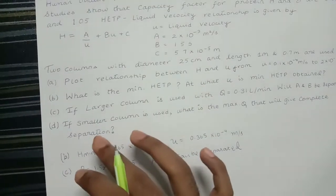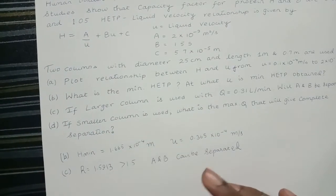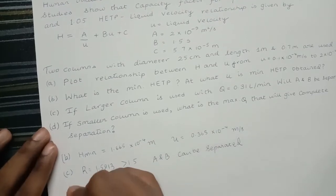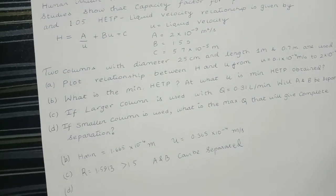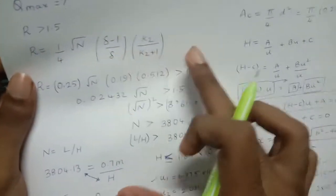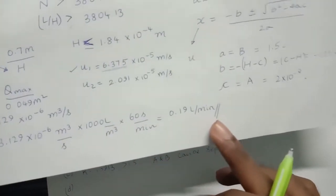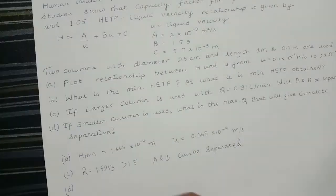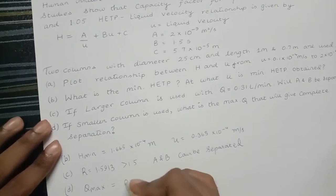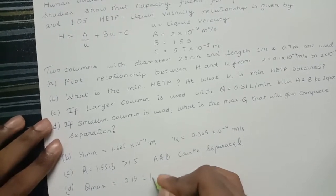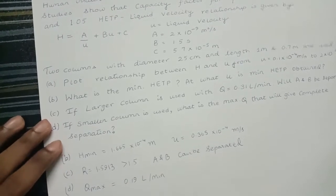For part d, if we use a smaller column, what is the maximum flow rate Q that will give complete separation? We started solving using the criteria that resolution should be greater than 1.5, and we arrived at Q maximum, reporting the value in liters per minute.